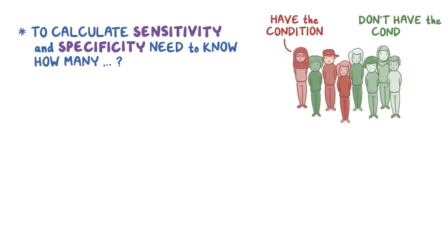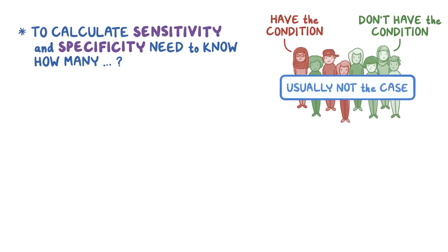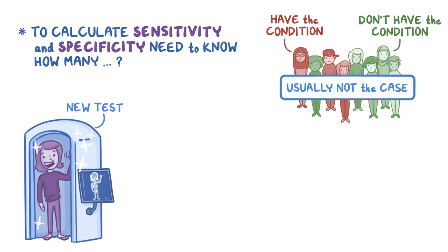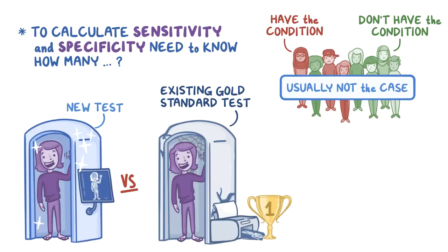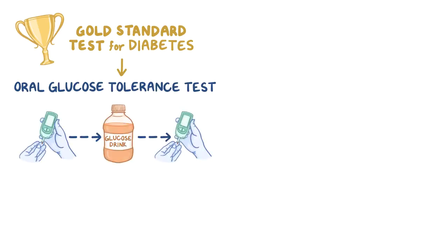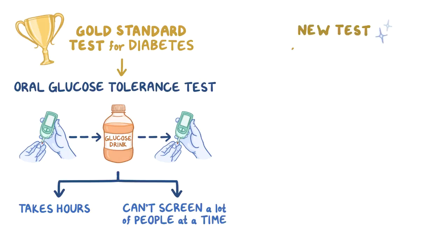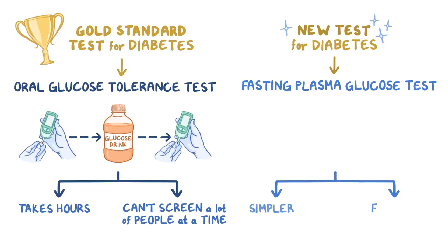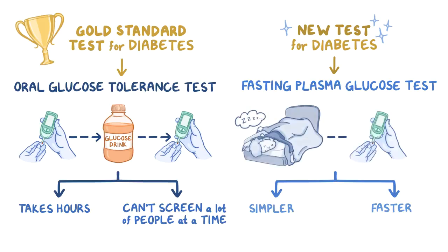To calculate sensitivity and specificity, we would have to know the number of individuals that truly have the condition or don't. Since the whole purpose of testing is to figure out if a person has a certain condition, a newly developed test is often compared to an existing gold standard test — the best known test that already exists. For example, the gold standard for diabetes is the oral glucose tolerance test, which involves measuring blood glucose levels before and after drinking a certain amount of glucose. But it takes multiple hours and can't really screen many people at once, so a new test called the fasting plasma glucose test was developed because it's simpler and faster, requiring only one blood sample taken in the morning after a person has fasted overnight. Before it was put into practice, the fasting plasma glucose test was compared to the oral glucose tolerance test to make sure it had a relatively high sensitivity and specificity.